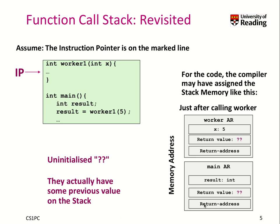We have an address in memory where we have to execute the code once main is completed. Now, when we call worker1, we push on the stack this activation record and push down the argument for the formal parameter x. This value gets assigned with the actual value 5, because that is the argument we gave. We don't know the return value yet because this function is not yet completed, but we know the return address — basically this line in the code — so that we can later assign the result. We see some parts that are still uninitialized.